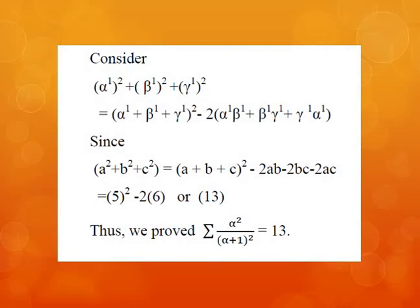Consider α′² + β′² + γ′² = (α′ + β′ + γ′)² − 2(α′β′ + β′γ′ + γ′α′), using the algebraic identity a² + b² + c² = (a+b+c)² − 2ab − 2bc − 2ac. Substituting α′ + β′ + γ′ = 5 and α′β′ + β′γ′ + γ′α′ = 6, we get 5² − 2×6 = 25 − 12 = 13. Thus we have proved that [α/(α+1)]² + [β/(β+1)]² + [γ/(γ+1)]² = 13.